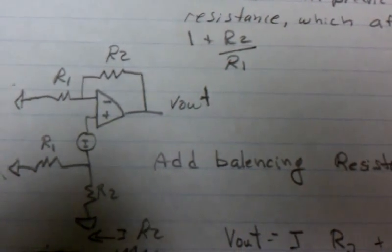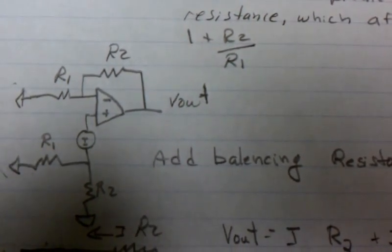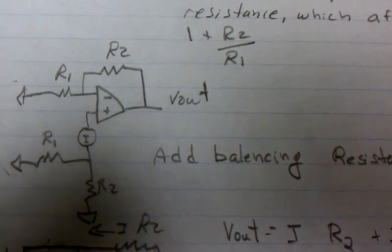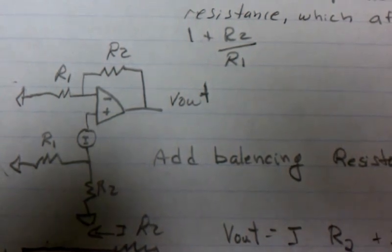One solution to this is to add balancing resistors, and we can see that R1 and R2 are connected to the negative terminal of the offset. And we'll still get the same equations.